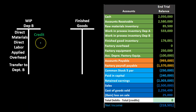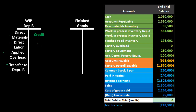At some point, work in Department B is also completed. Department B includes its own direct materials (like the wrapper), direct labor, applied overhead, plus the costs transferred in from Department A. Once the candy is wrapped in Department B, we credit Work in Process — Department B and transfer it to Finished Goods, representing the cost of goods manufactured.